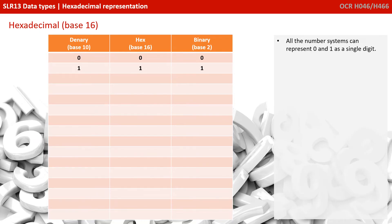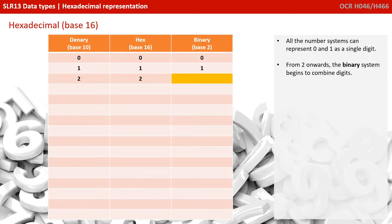Let's summarize and recap those three base number systems and look at them all side by side, counting up from 0. In the left column we have base 10 denary, followed by base 16 hexadecimal, followed by base 2 binary. All those number systems can represent 0 and 1 in a single digit. But as soon as we get to 2, we can represent it in base 10 and in hex, but in binary we've now run out of unique digits — we only have 0 and 1, so we have to combine those to represent the denary value 2.